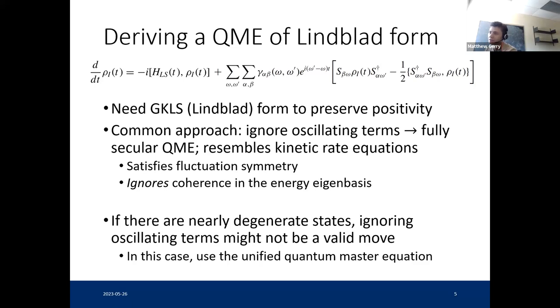That equation has a lot of good properties. It preserves positivity of the density matrix for sure. It also satisfies fluctuation symmetry. But it basically just looks like kinetic rate equations for population to jump between the energy eigenstates. So it ignores coherence in the energy eigenbasis. And that's not always going to be a good move. If you consider the possibility that there might be some nearly degenerate states in the system, then you can have terms where these two frequencies are pretty close. So the timescale for this oscillation is actually pretty slow and it might start to rival the timescale for the dissipative dynamics set by this rate gamma. So it might not be a good move to just ignore these terms.